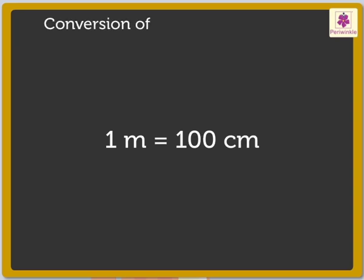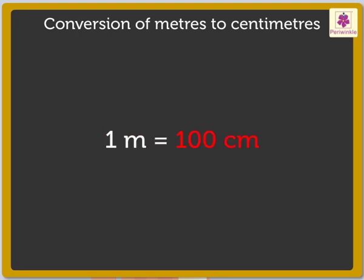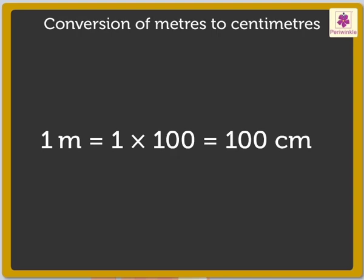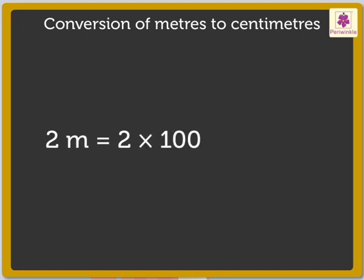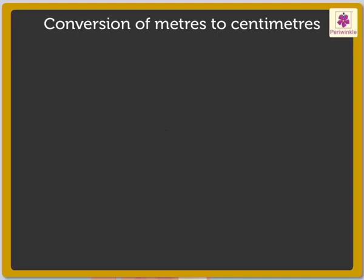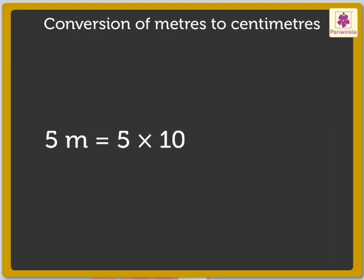Would you like to convert some metres into centimetres? It is very easy. As I said, 1 metre is equal to 100 centimetres. So to convert metres into centimetres, we have to multiply the metres by 100. For example, to convert 2 metres into centimetres, we multiply 2 by 100, which is equal to 200 centimetres. So if I want to convert 5 metres into centimetres, I multiply 5 by 100, which is equal to 500 centimetres. Correct.